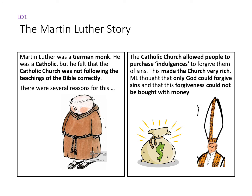Reason number one is that the Catholic Church allowed people to purchase indulgences — one of the words on your key word list. You could pay these to have sins forgiven, which made the Church very rich. Martin Luther thought that only God could forgive sins and that this forgiveness could not be bought with money. He was angry that rich people could pay indulgences to have their sins forgiven and go to heaven, whereas he felt it was unfair that poorer people were less able to have their sins forgiven than the wealthy.